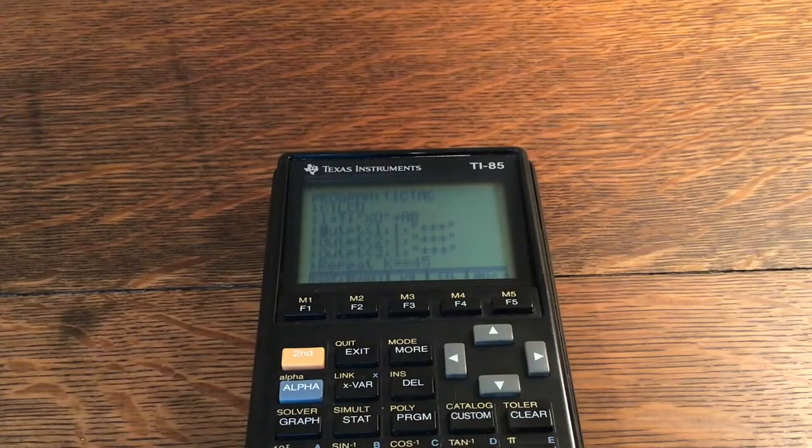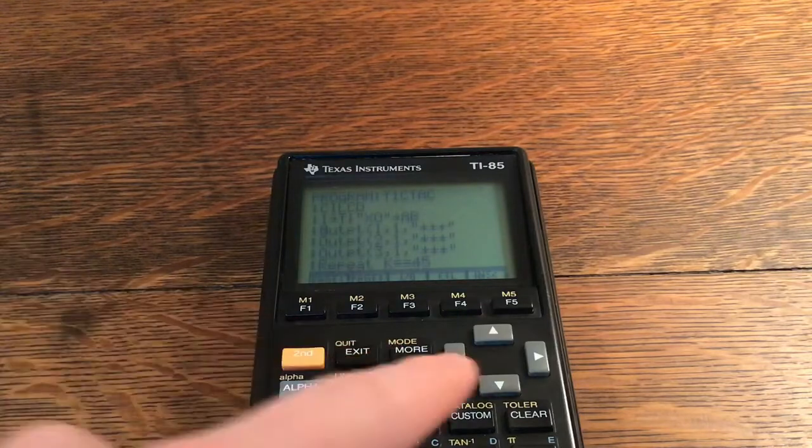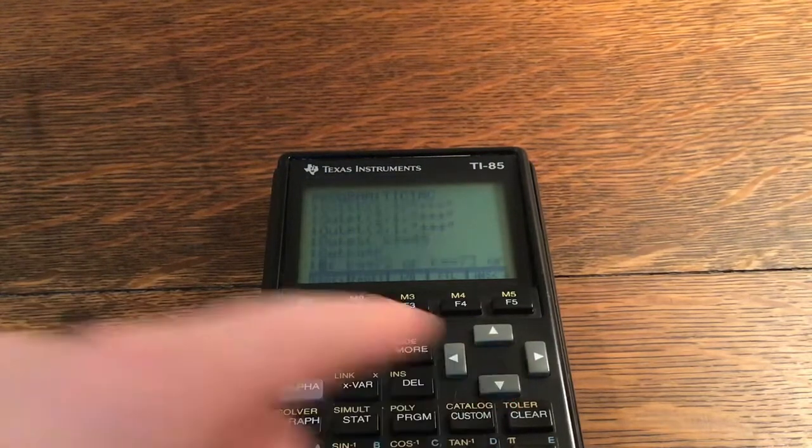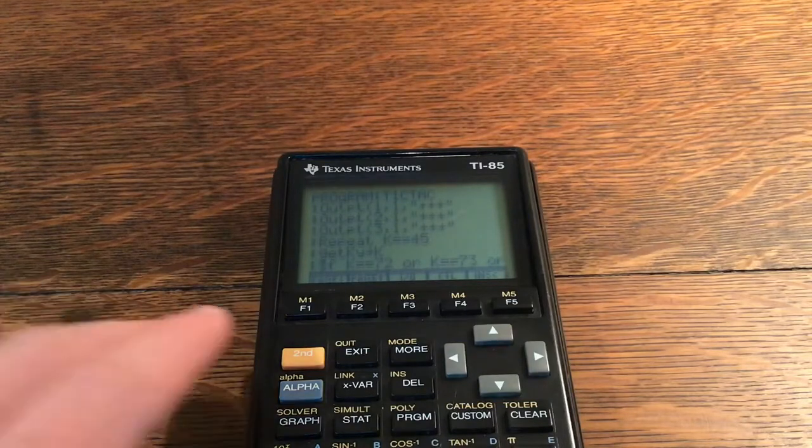Then Output at one comma one comma three plus signs, Output at two comma one comma three plus signs, and Output at three comma one comma quote three plus signs. Repeat Until K is equal to equal to 45.